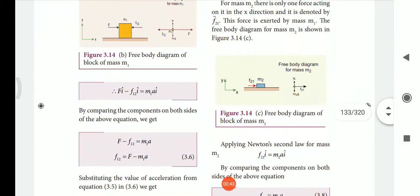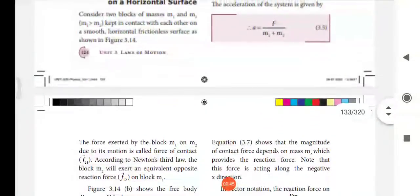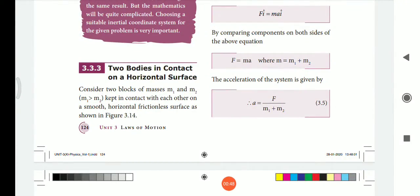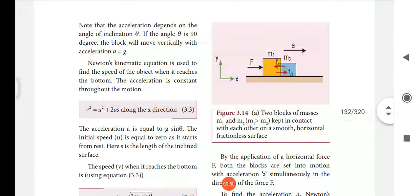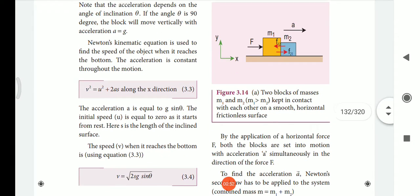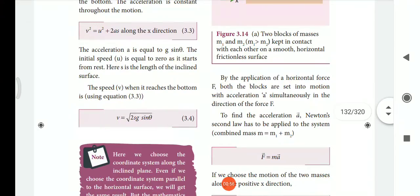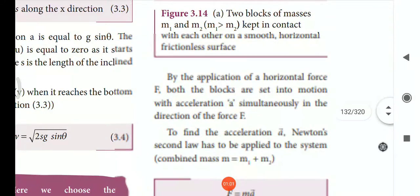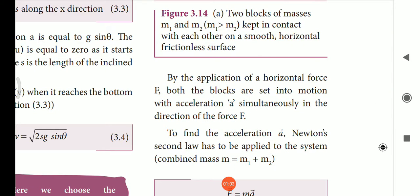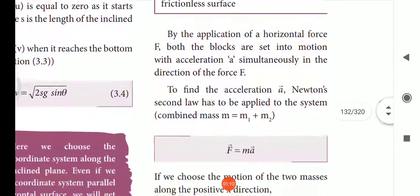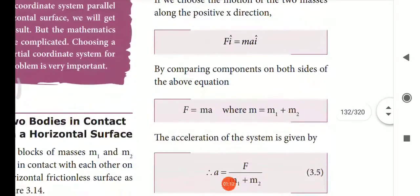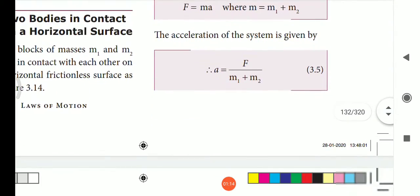The topic is two bodies on horizontal surfaces. The horizontal surface with M1, M2, F21, F12 - two block bodies. Two blocks of masses M1 and M2 kept with each other on the smooth horizontal frictionless surface, F is equal to MA. This is all discussed in the last class; you can see the last video.